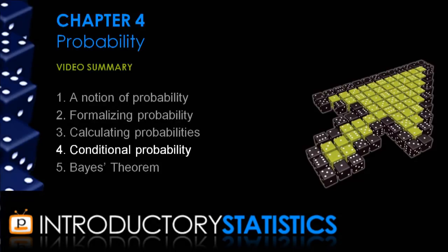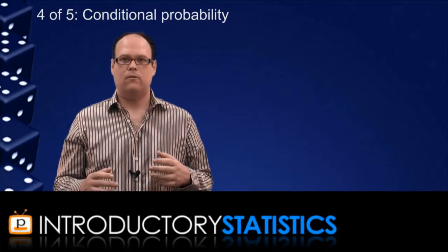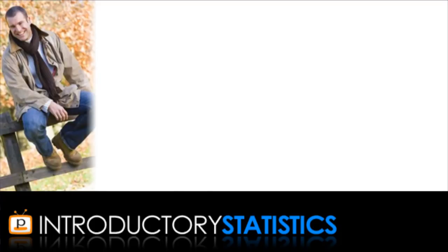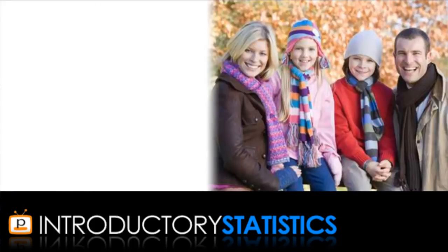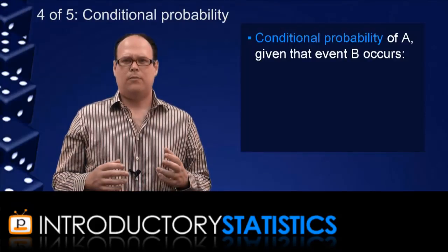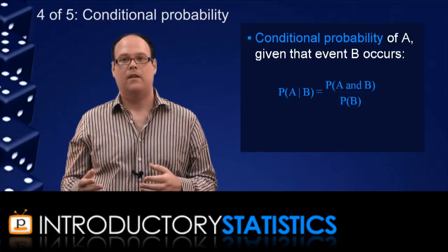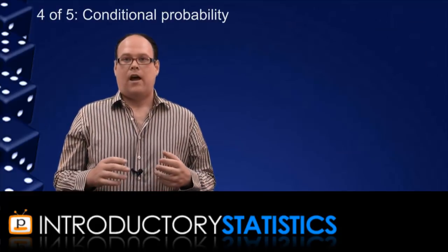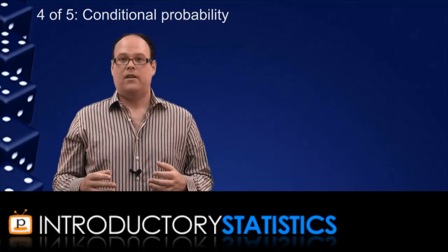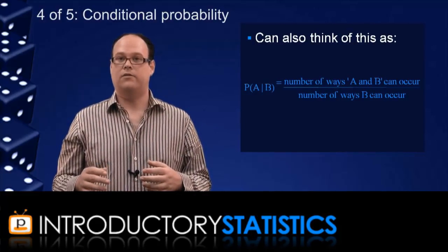Now what is conditional probability? Sometimes the probability that we assign to an event will change if we're given some new condition or we're told that some other event has occurred. For example, what is the probability that an adult has children? And would that probability change if we're told that the adult in question is married? It probably would. You'd expect the probability to go up in that case, and that's conditional probability. The conditional probability of an event A, given the information that another event B has occurred, is given by this formula. We refer to that symbol as the probability of A, given B. We sometimes pronounce it as the probability of A, bar B. Another way of thinking about the conditional probability of A, given B, is it's the number of outcomes that lead to both A and B occurring, divided by the number of outcomes that lead to just B occurring.